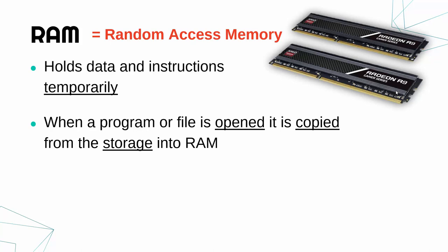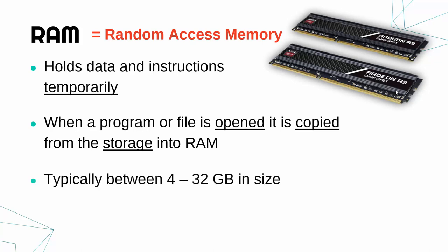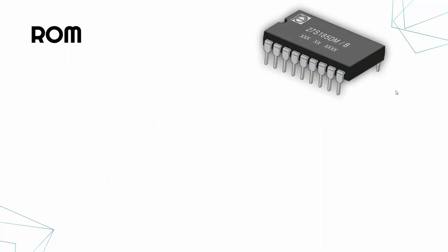When you open programs they load from storage into RAM. RAM is usually a few gigabytes in size — typically between 4 and 32 gigabytes in a standard computer — whereas storage might be 500 gigabytes, a terabyte, or more. RAM doesn't need to be as large as storage because it only holds what's currently open. ROM, on the other hand, is very very small but essential — it stands for read only memory and is a very small memory chip.